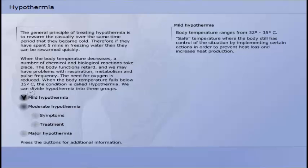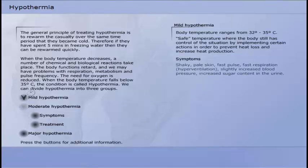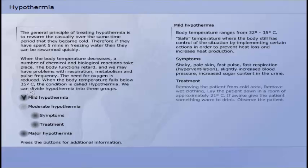When the casualty suffers from mild hypothermia, the body temperature ranges from 32 degrees to 35 degrees Celsius. Safe temperature where the body still has control of the situation by implementing certain actions in order to prevent heat loss and increase heat production. The symptoms of mild hypothermia are shaky pale skin, fast pulse, fast respiration, slightly increased blood pressure, increased sugar content in the urine.